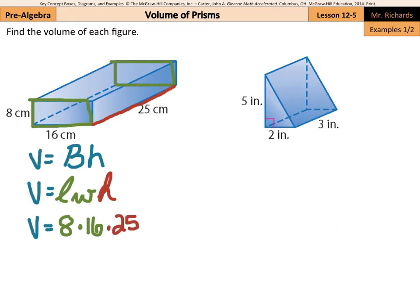And when I multiply these three numbers together, the product is 3,200 centimeters cubed. With volume, our units are going to be cubed.